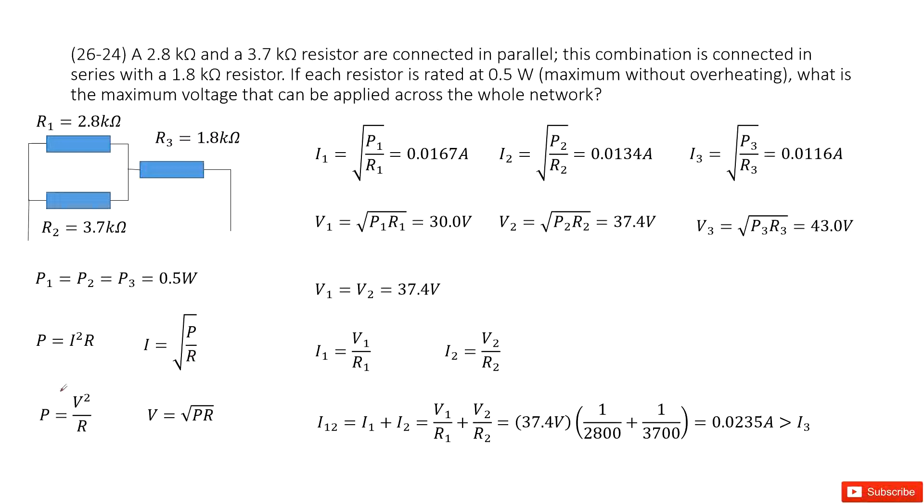In these circuits, we can see R1, R2 in parallel connection and then connected in series with R3. And each resistor, the power is equal, that is 0.5W. I ask you what is the maximum voltage that can be applied across the whole network.